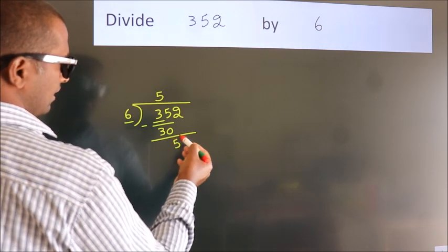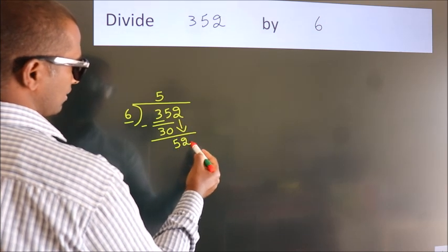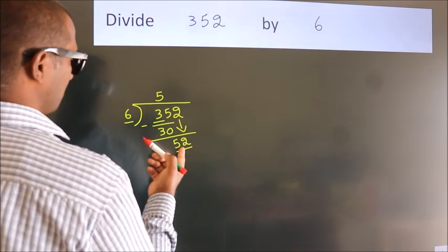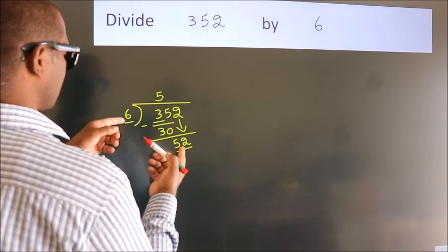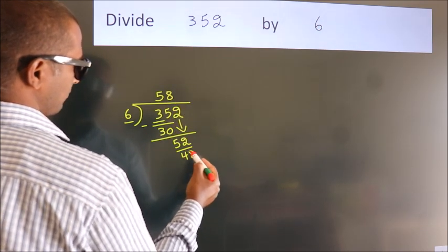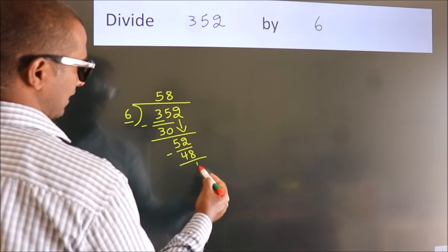After this, bring down the beside number. So, 2 down. So, 52. A number close to 52 in the sixth table is 6, 8, 48. Now we subtract. We get 4.